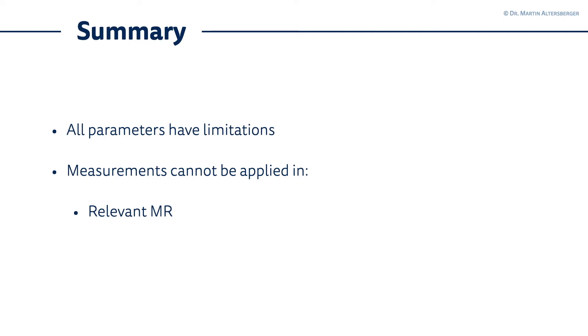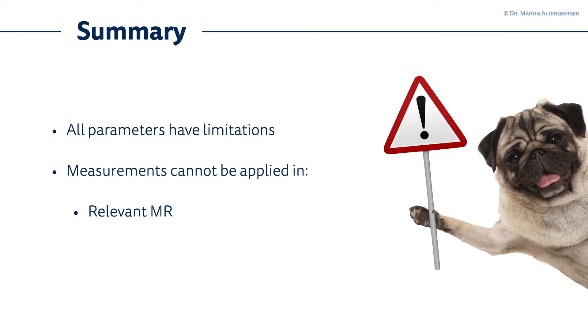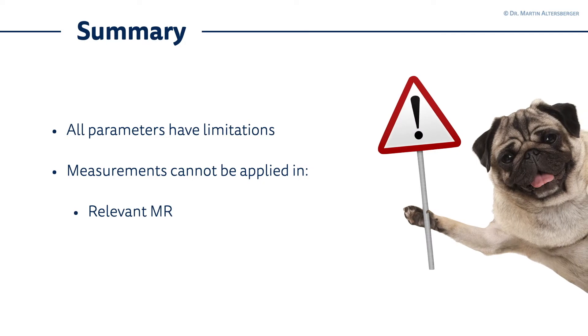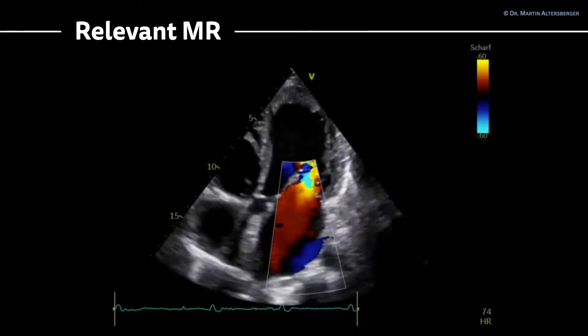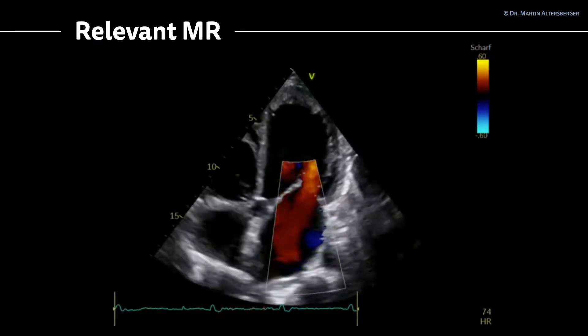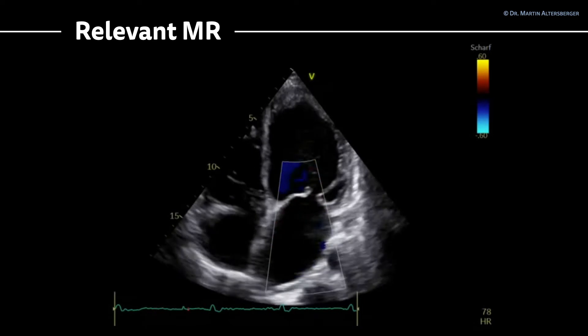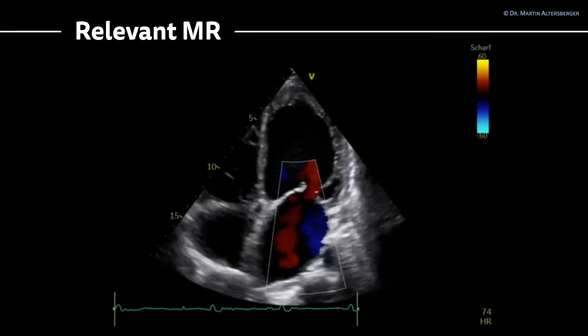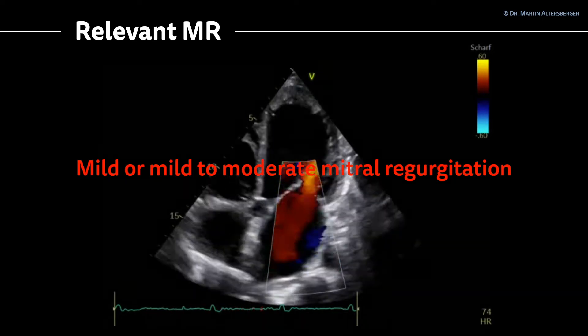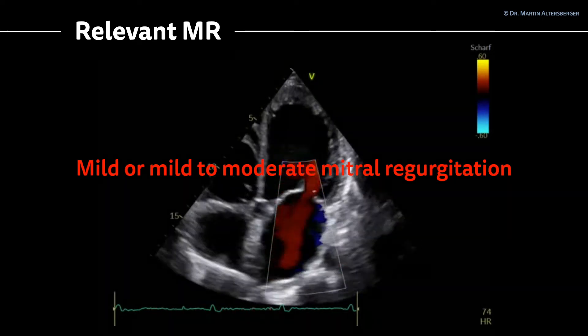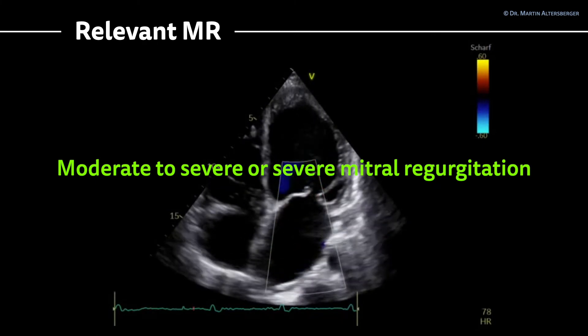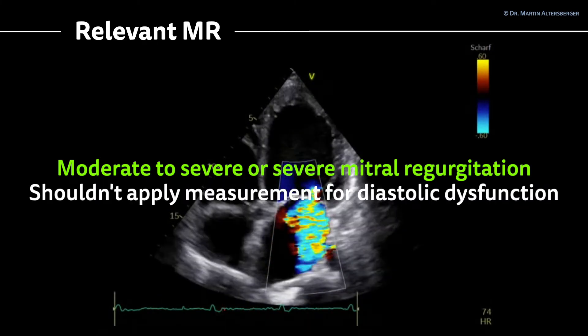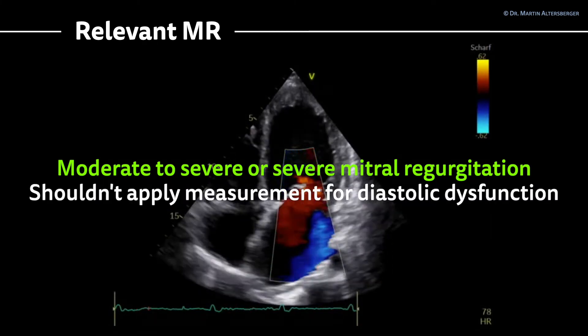There are also some situations where the measurements cannot be applied. One specific situation is relevant mitral regurgitation. Here I provided you with a loop with relevant MR. In this case, you simply cannot assess left ventricular filling pressures properly. If you see relevant MR - not mild or mild-to-moderate mitral regurgitation, but moderate-to-severe or severe mitral regurgitation - you shouldn't apply measurements for diastolic dysfunction.